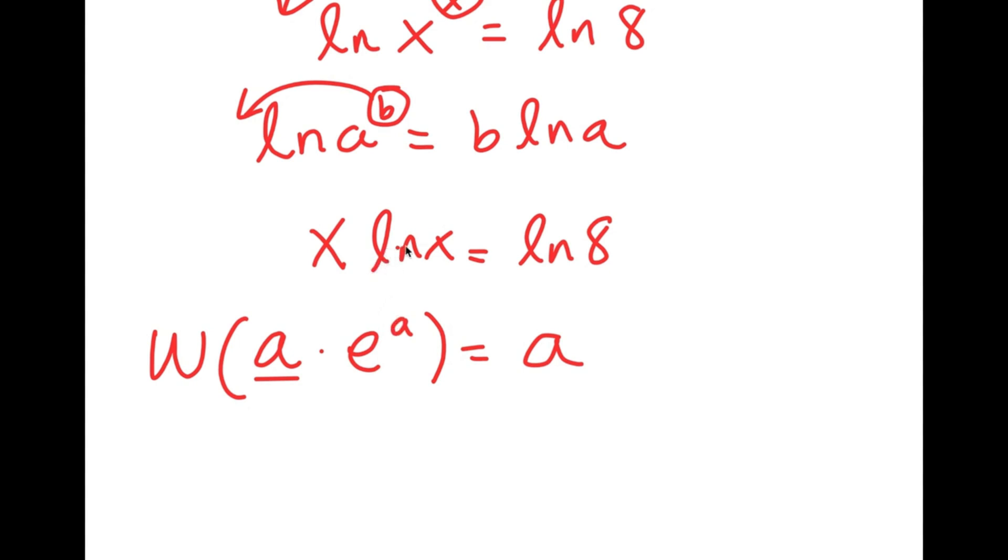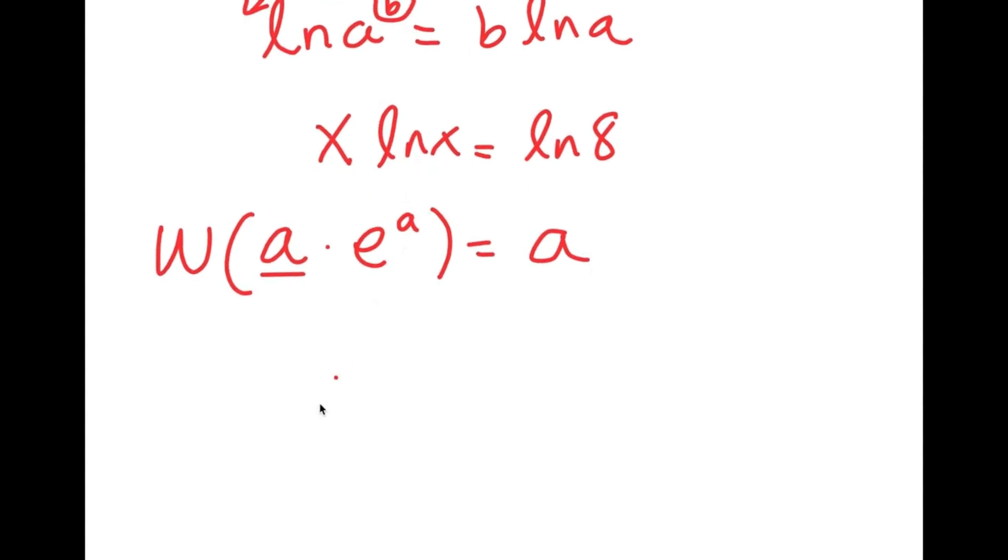So in this case, I'm going to rewrite this as ln x times e to the power of ln x is equal to ln 8, because x is the same thing as e to the power of ln x.